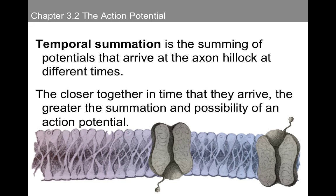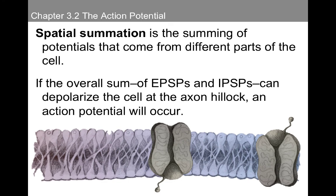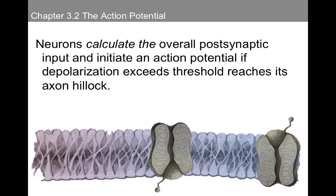Temporal summation refers to the summing of potentials that arrive at the axon hillock at different times. The closer together in time they arrive, the greater the summation and the possibility of an action potential. Another form is spatial summation — the summing of potentials that come from different parts of the cell. If the overall sum of EPSPs and IPSPs can depolarize the cell at the axon hillock, an action potential will occur. Neurons calculate the overall postsynaptic input and initiate an action potential if depolarization exceeds threshold.